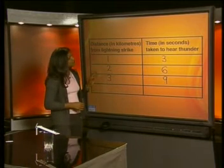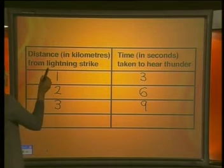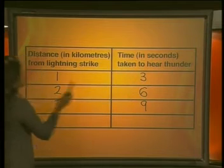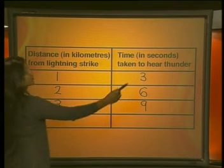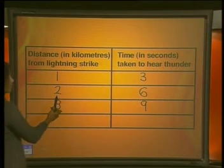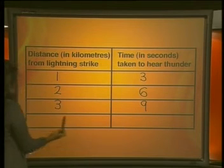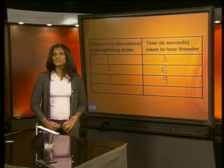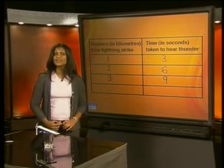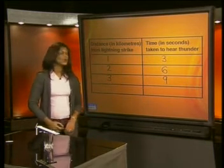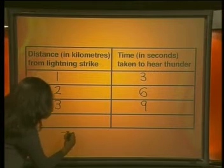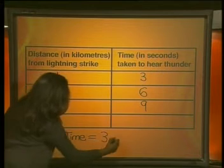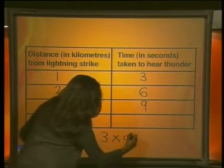Let's look at the table of values again. What relationship do you notice between the distance and the time taken? When we had one kilometer it was three seconds, two kilometers was six seconds, and three kilometers was nine seconds. Do you see that the time is always three times the distance? We can write: time is equal to three times the distance.